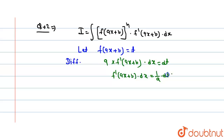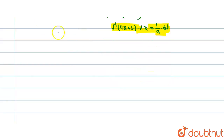Now f'(ax + b) dx = (1/a) dt. Substitute the value f(ax + b) = t and f'(ax + b) dx = (1/a) dt in the integral. So we get I = ∫ tⁿ · (1/a) dt.